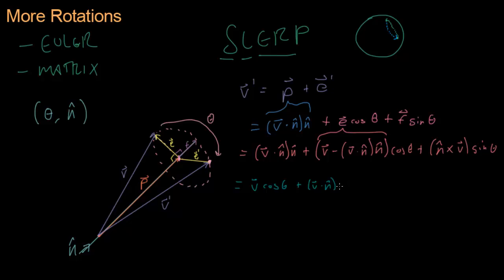We get this right here: V dot N times N times 1 minus cosine theta, just involves doing a little bit of factoring, it's not hard. We get this right here: N cross V sine theta.